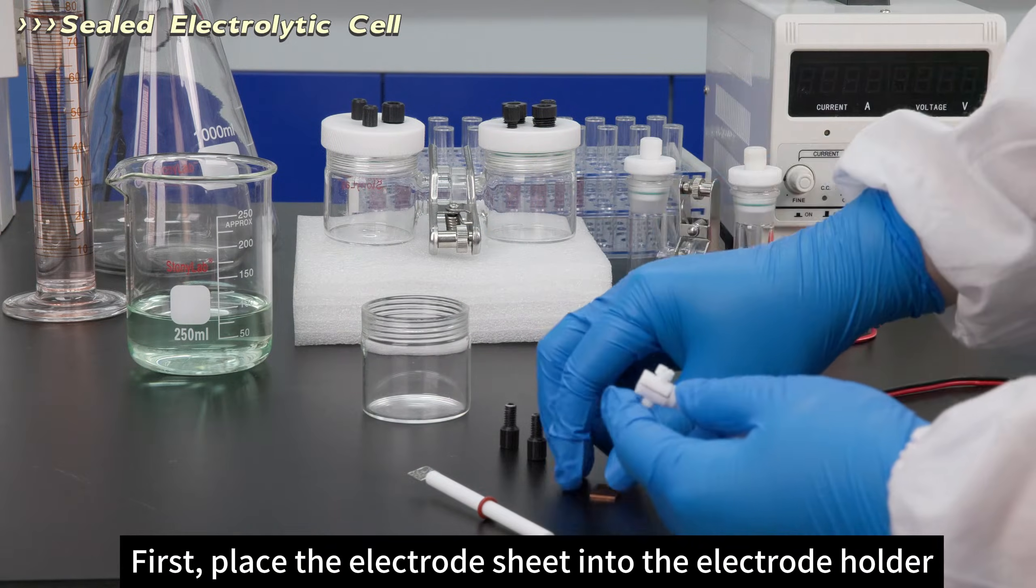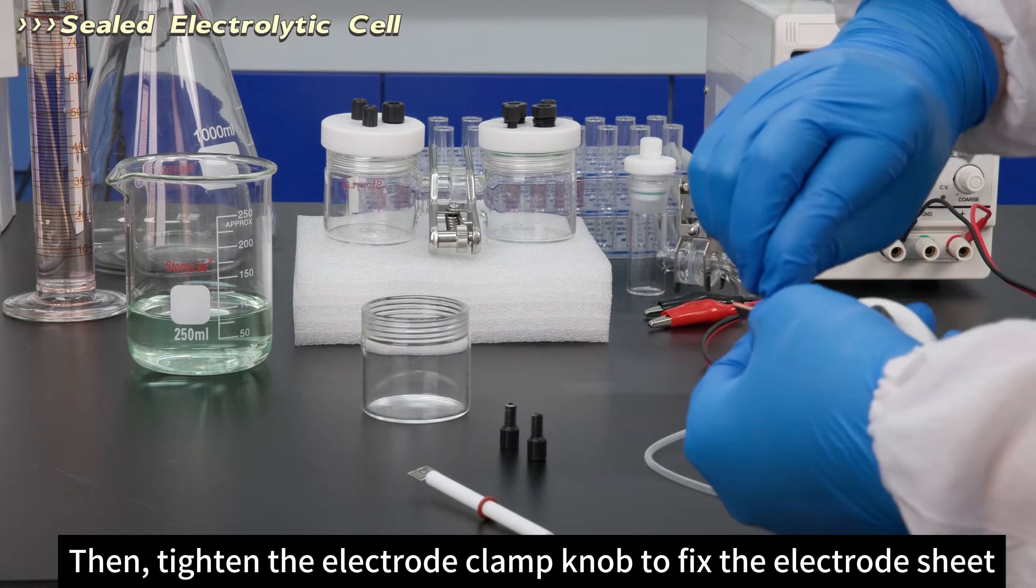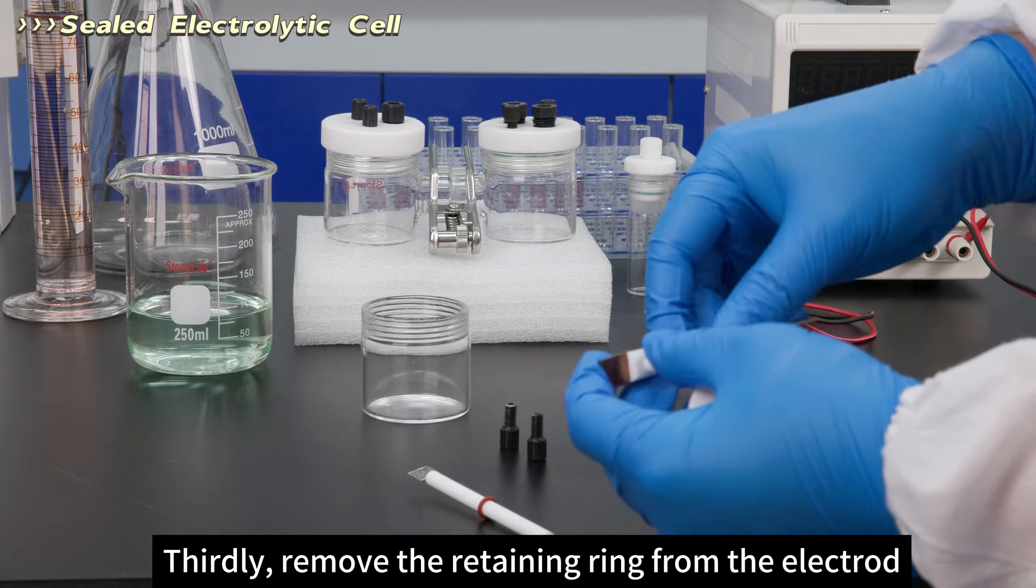Place the electrode sheet into the electrode holder, then tighten the electrode clamp knob to fix the electrode sheet.